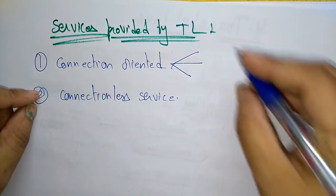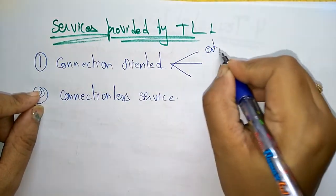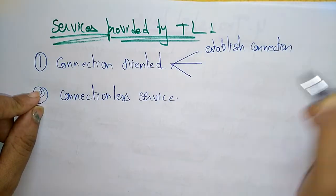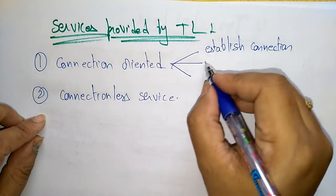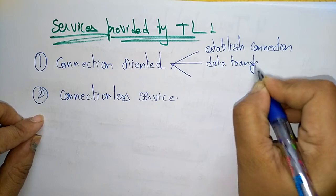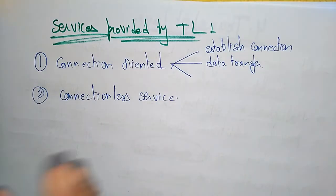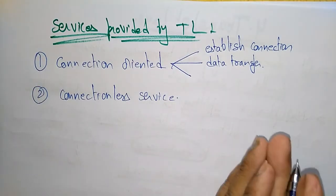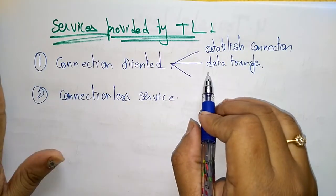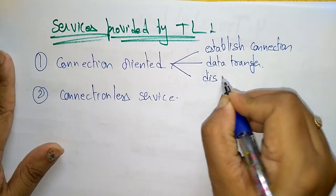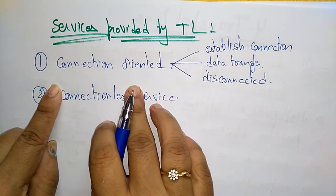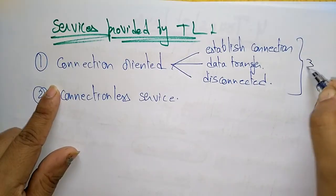Connection-oriented service operates in three phases. First, establishing the connection. Second, data transfer — once a connection is established between one host and another, the data is transferred. Third, the connection is disconnected. So connection-oriented service operates in these three phases.